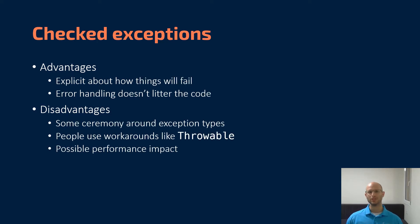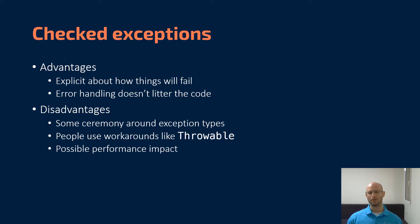With checked exceptions, you can still be very explicit about how things will fail. In a language like Java, you can say 'throws IOException' and have a list of additional exception types that can be thrown by a function or method. Error handling doesn't end up littering all of your code — exceptions bubble up and you can deal with them at the part of your code that can actually handle them. However, on the disadvantages side, you still end up having some ceremony around exception types. You have to explicitly list them, which can lead to frustration and tediousness. People end up using workarounds, such as using the more general throwable to bypass the checked exception mechanism, and you lose those advantages and end up in the unchecked exception world.